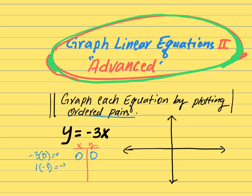When x equals 1, the result is minus 3. Minus 3 times 1 gives us minus 3. So our two ordered pairs are: (0, 0) and (1, minus 3). So x is 0, 1, 2, 3, 4 and we get minus 1, minus 2, minus 3.